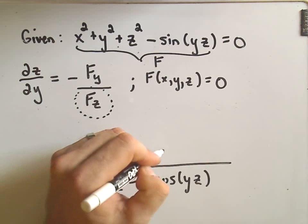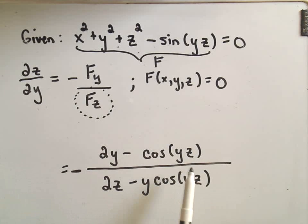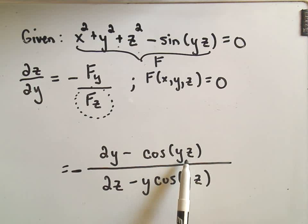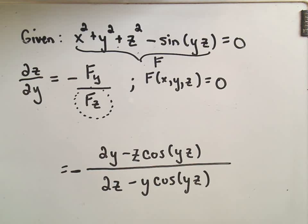We'll get minus cosine. We'll leave the inside part alone, yz. But now we have to take the derivative of the inside with respect to y, which means we're treating z like a constant. So the derivative of the inside part would just be z, and I'm going to write that in front of the cosine just to kind of keep things hopefully a little bit clearer.